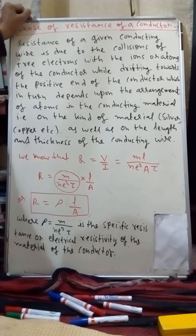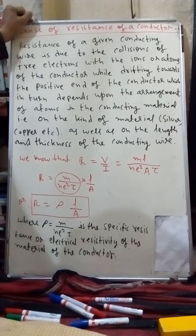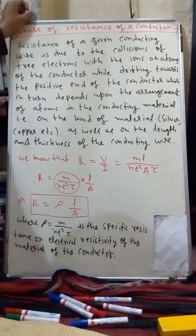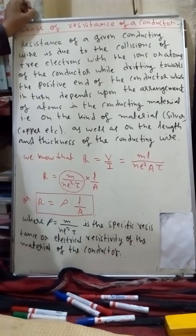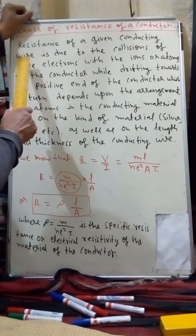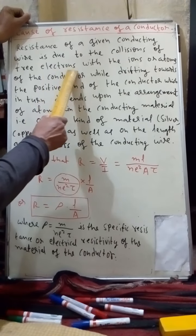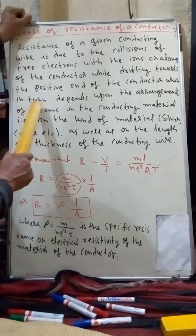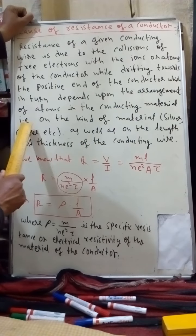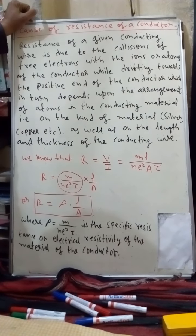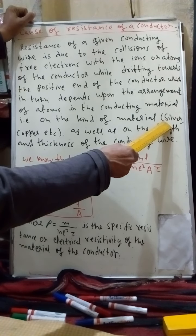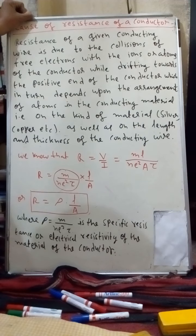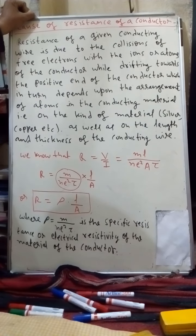Because electrons cannot move freely and collide repeatedly with ions and atoms of the conductor, they cannot constitute electric current efficiently. The resistance of a conducting wire is due to collisions of free electrons with the ions or atoms of the conductor while drifting toward the positive end. This also depends on the arrangement of atoms and the kind of material — for example, silver has higher conductivity than copper because of differences in atomic arrangement.